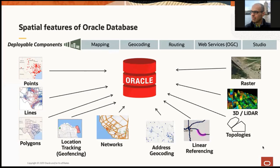Everything happens somewhere — and that's why spatial is so important in general. Not only does everything happen somewhere, it also happens at some time. So we're going to talk about the spatial features of Oracle database and, as we get into the contact tracing scenario, we're really talking about space, location relationships, and time — and how we're able to bring those together with features of the Oracle database.